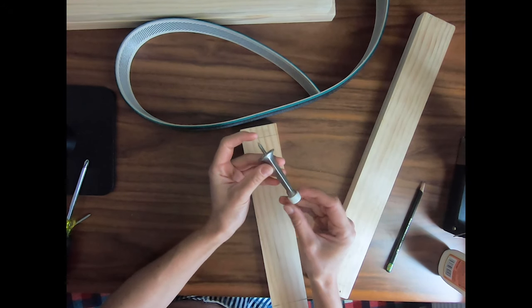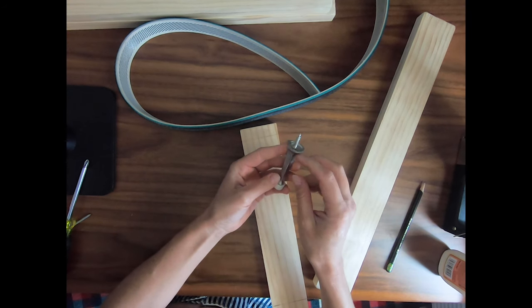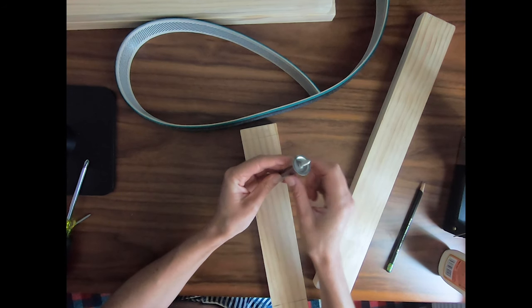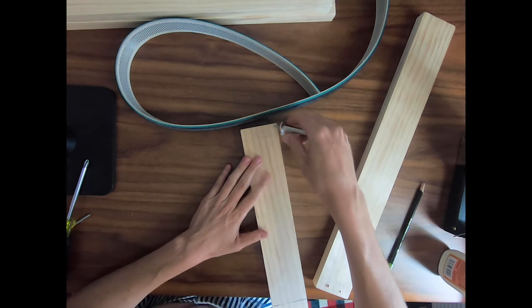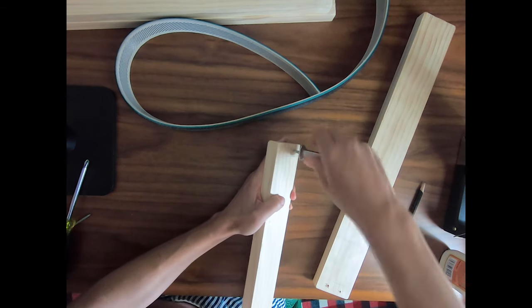And then this is just a random doorknob that I found in my junk drawer. You can buy them and I think they're only a dollar or two a piece and it has a really sharp point on it making it easy to go in the wood. So you just estimate where you're going to want it and you twist it into place.